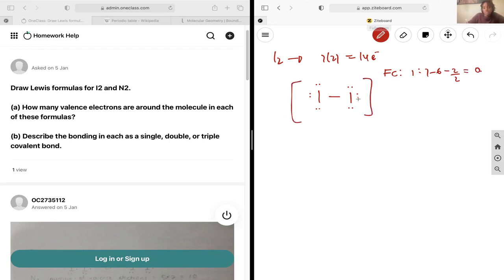For this one, N2, you're going to have 2 by 5, and so that is going to be 10 electrons to play with. If we start with just a single bond and fill in both octets...